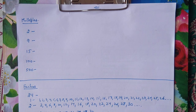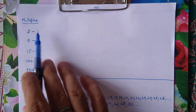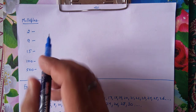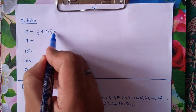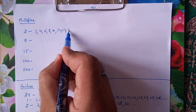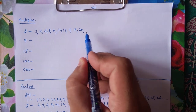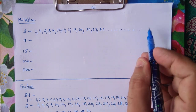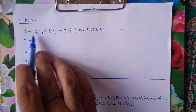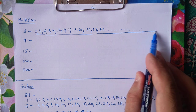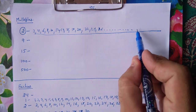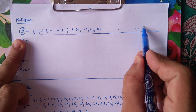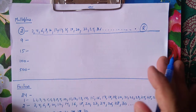First we will understand what multiples and factors are. Multiples - जो भी हम किसी number की table बोलते हैं, वो सारे उसके multiples होते हैं. जैसे कि 2 की table में 2, 4, 6, 8, 10, 12, 14, 16, 18, 20 and so on - 22, 24, 26 and goes on to infinity. यह सारे multiples of 2 हुए. अगर कोई भी number 2 की table में आता है, या 2 से divide करने पर remainder 0 आता है, तो वो 2 का multiple हुआ.